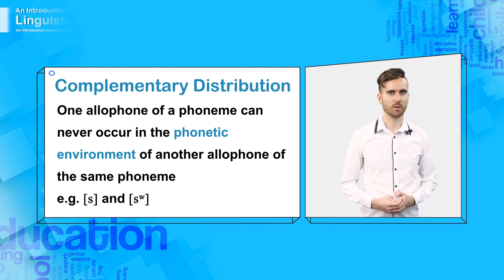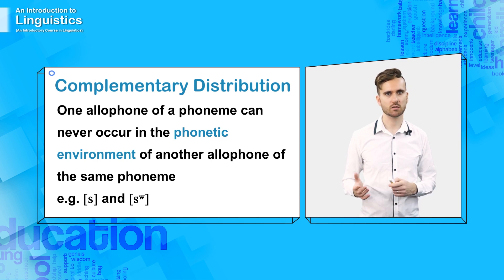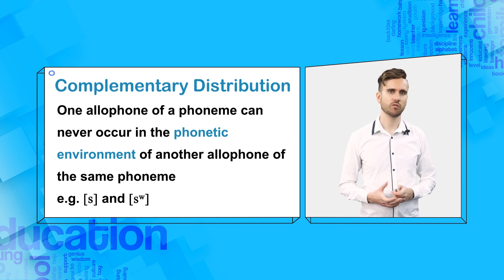The phonetic environment of an allophone is the sounds on both sides of the allophone. The surrounding sounds often affect the allophone. Remember that the phonetic environment can sometimes change a sound through processes, like assimilation. And it can also limit or control which sounds are used, which is the case for complementary distribution.